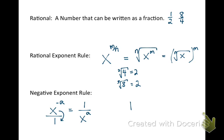Likewise, if you have one over x to the negative b — if it's on the bottom to begin with instead of the top — all we do is move it to the top. So we get x to the b on top over one, which is just x to the b.